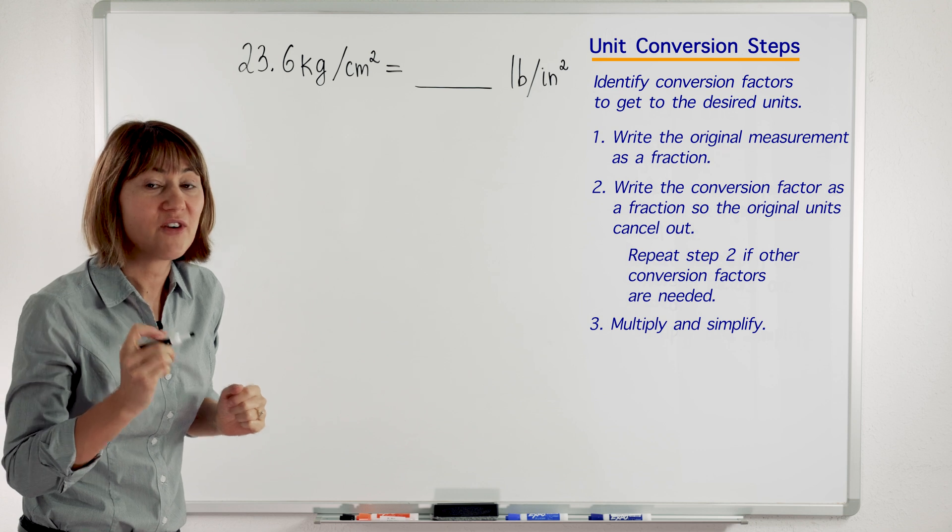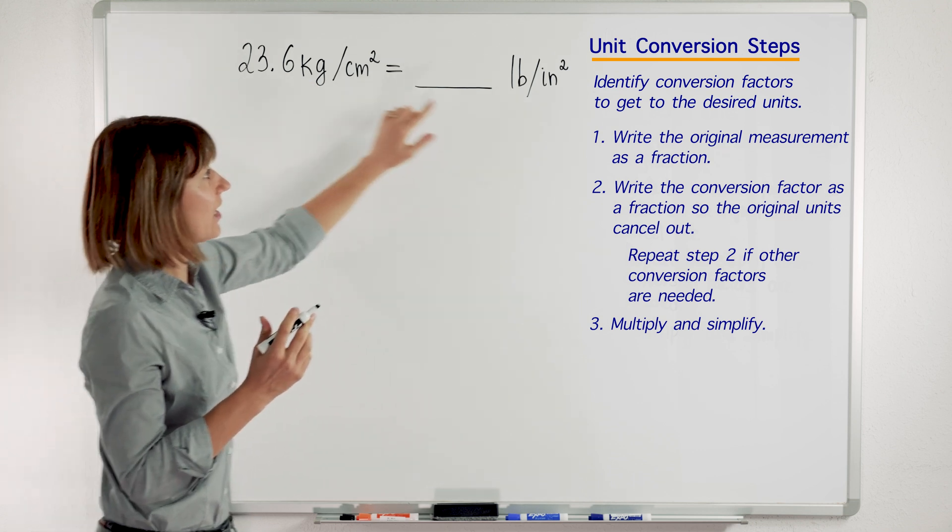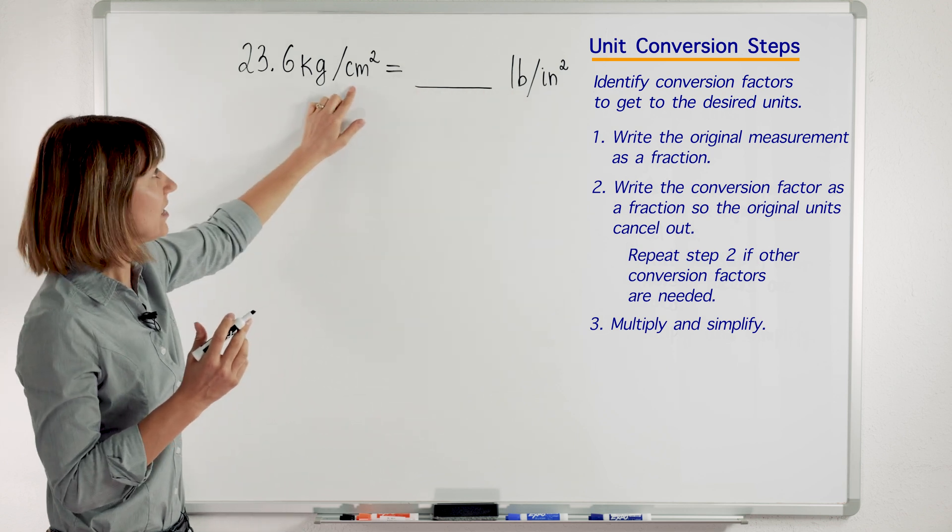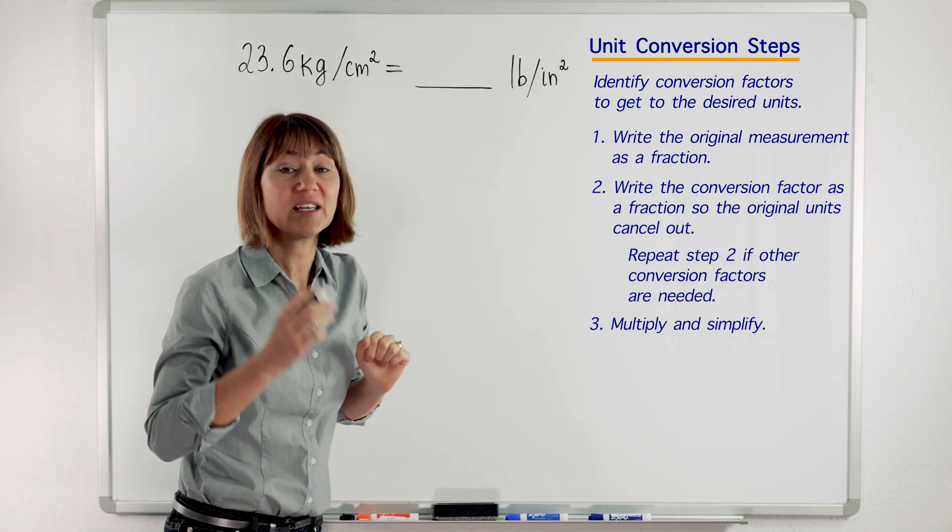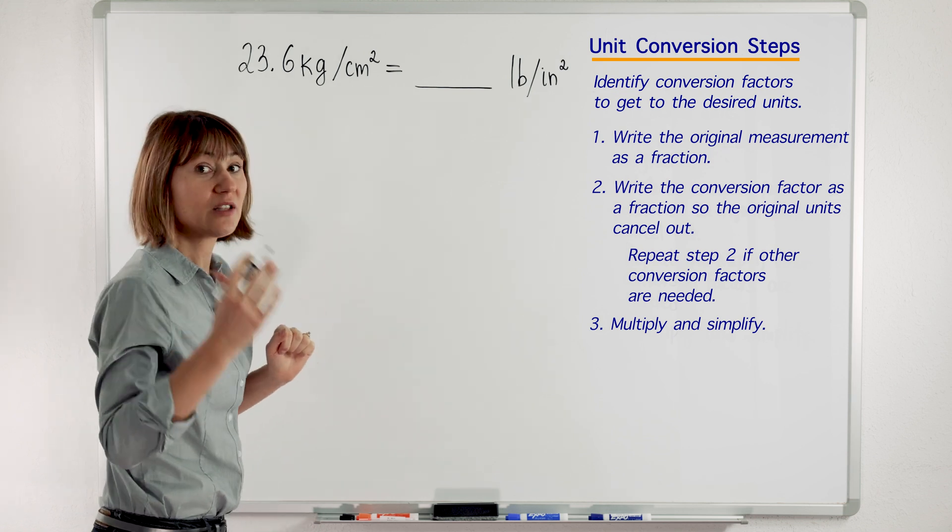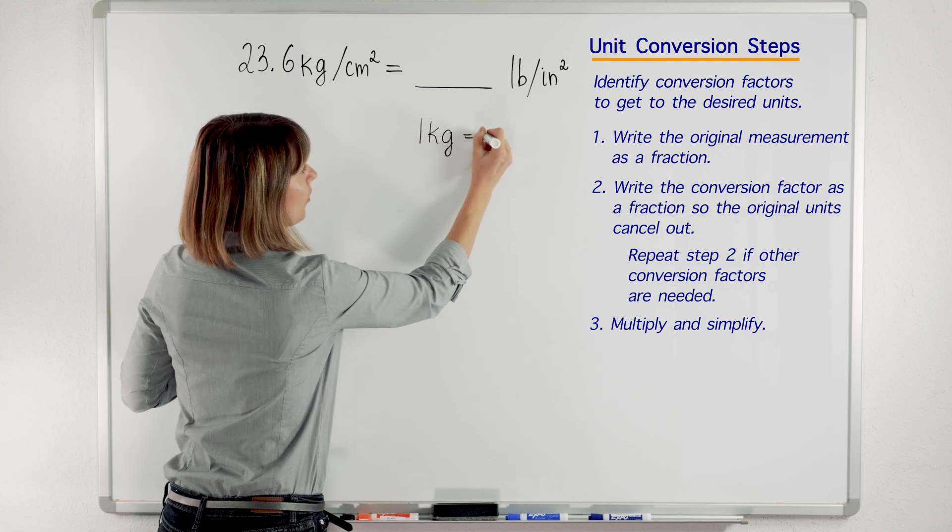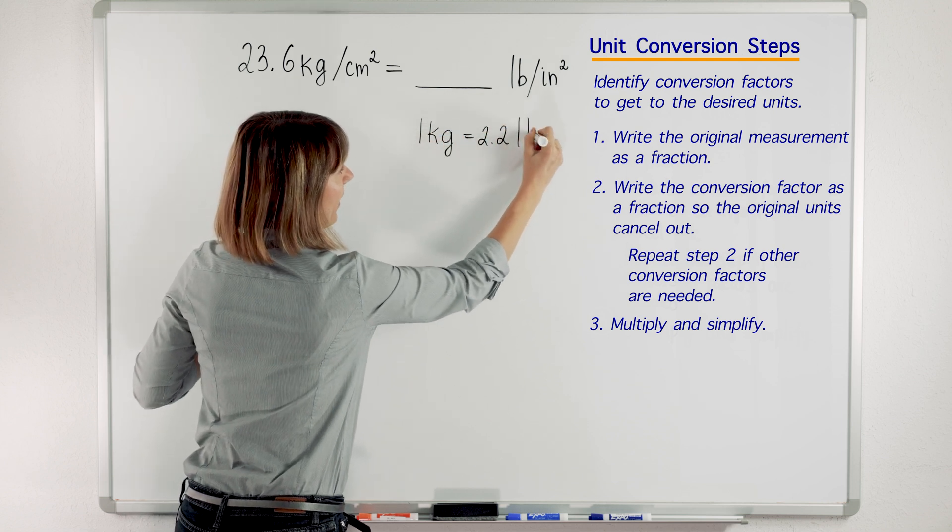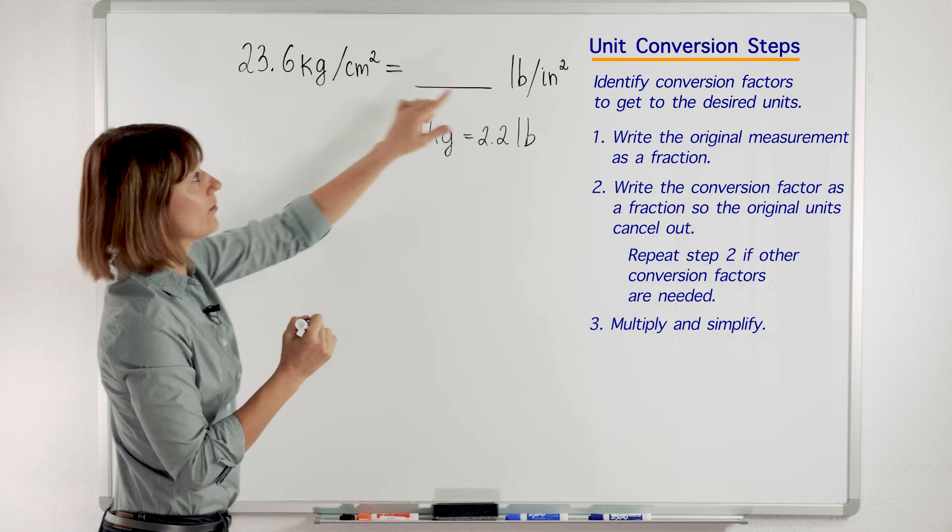First, we need to identify what conversion factors will help us get from kilograms to pounds and from centimeters squared to inch squared. We can look up in any conversion chart or table those conversion factors. One kilogram equals 2.2 pounds. So this conversion factor will help us get from kilograms to pounds.